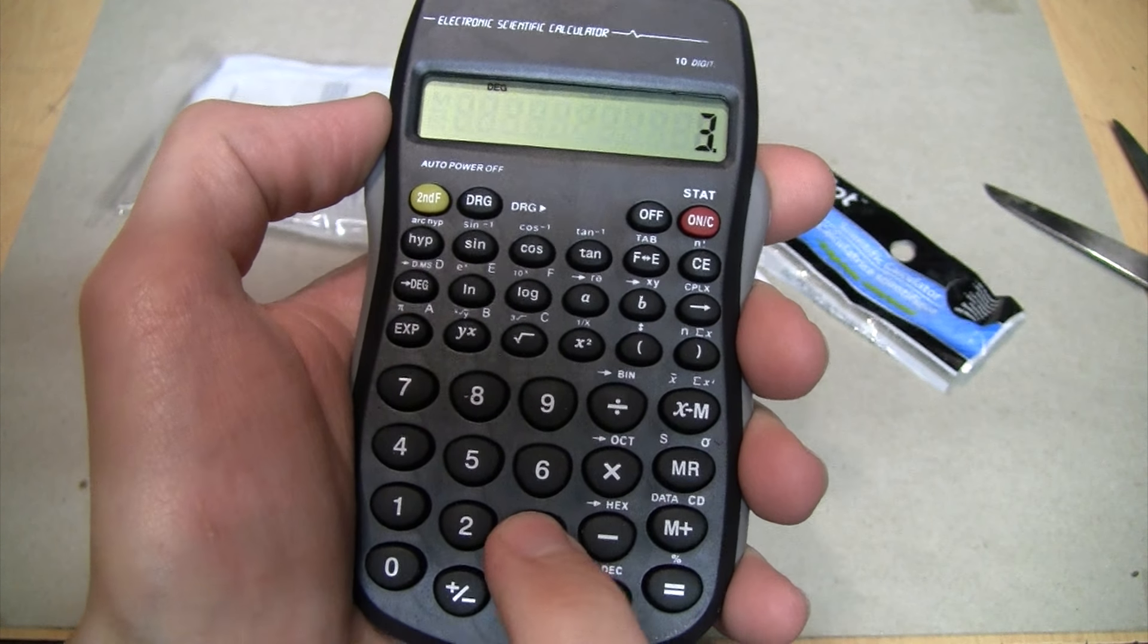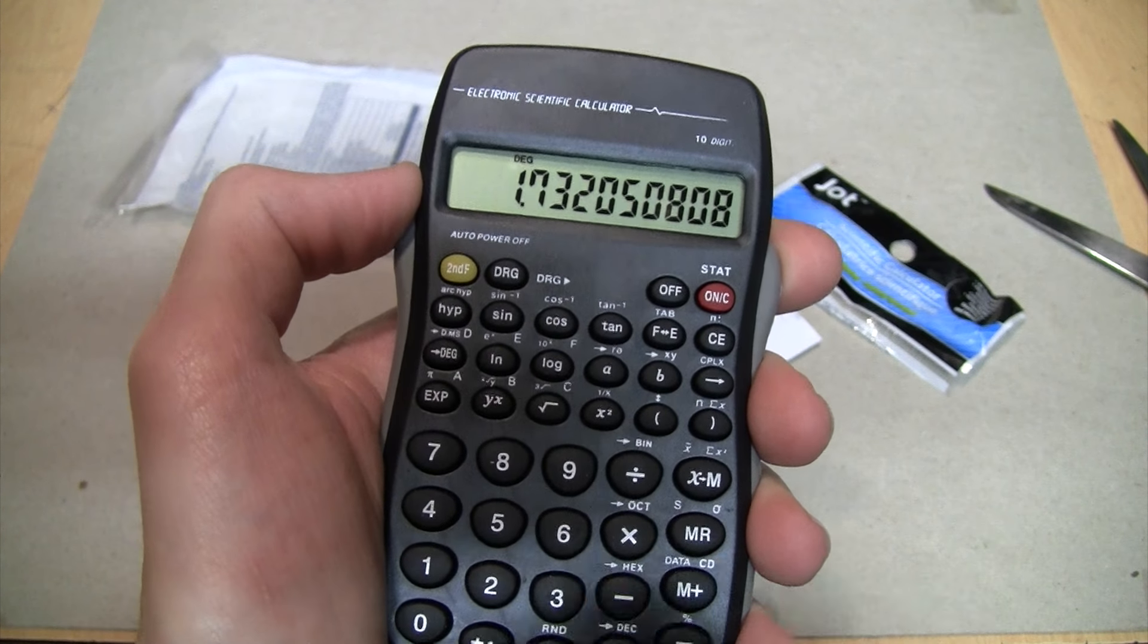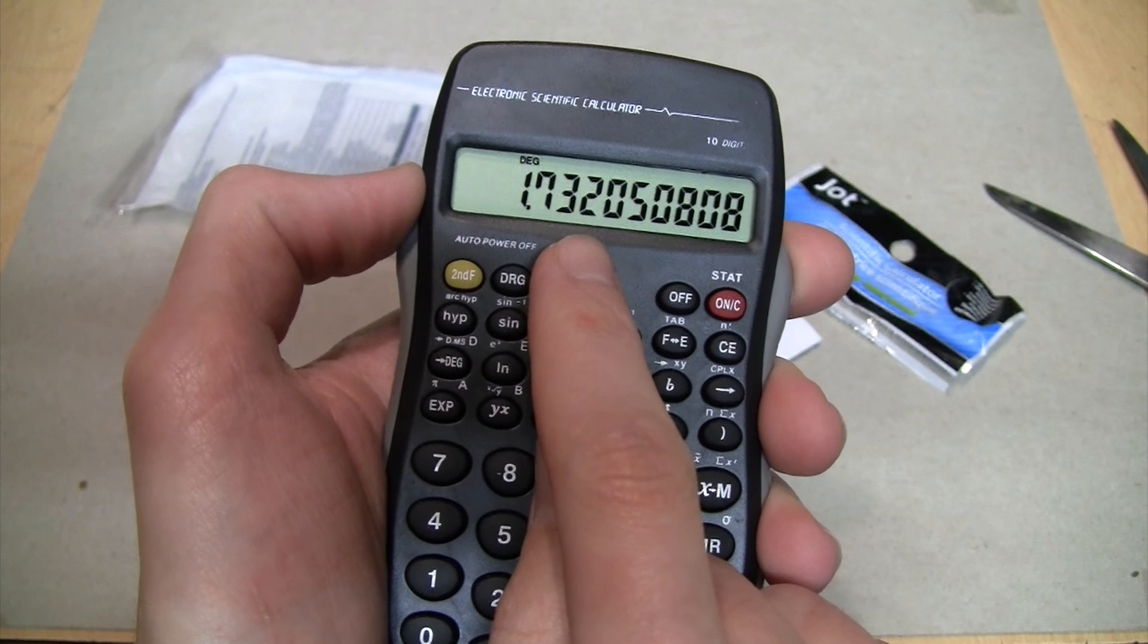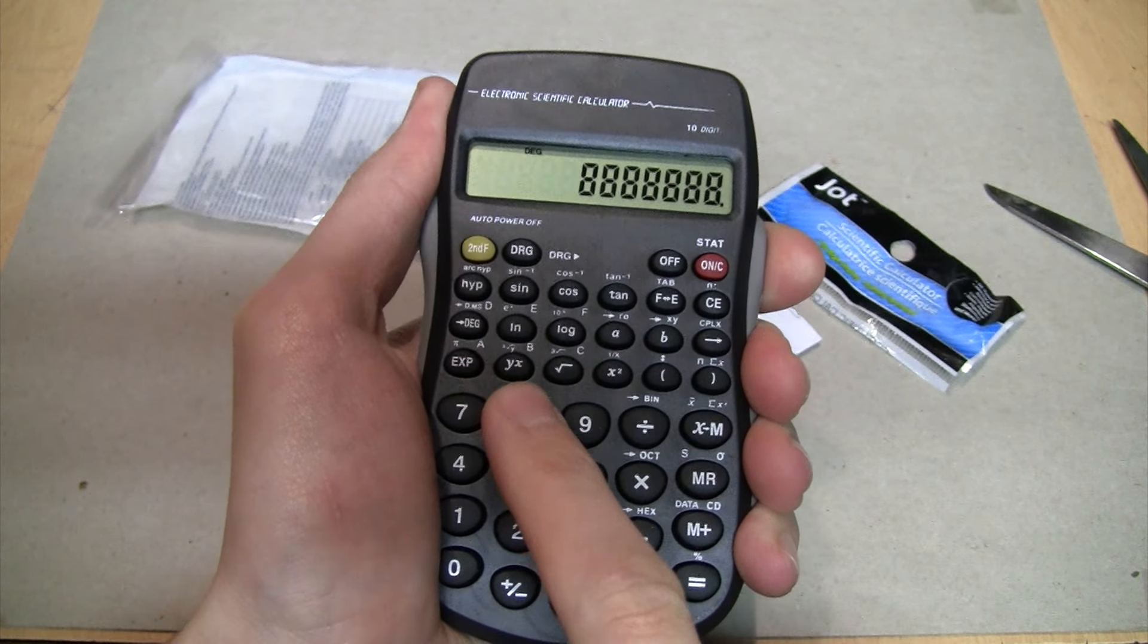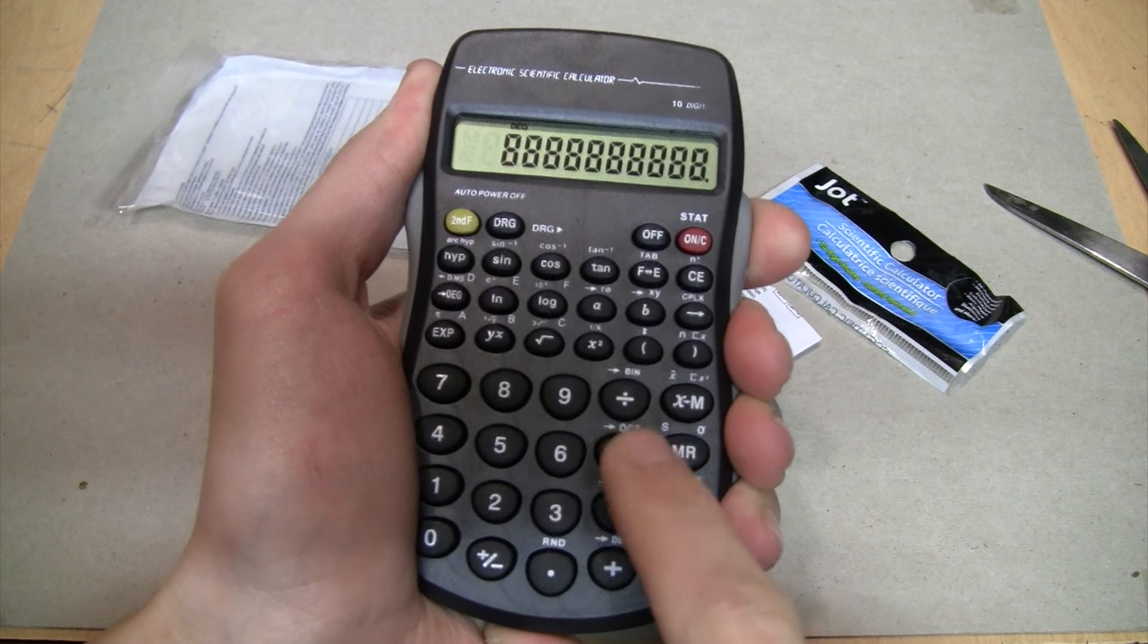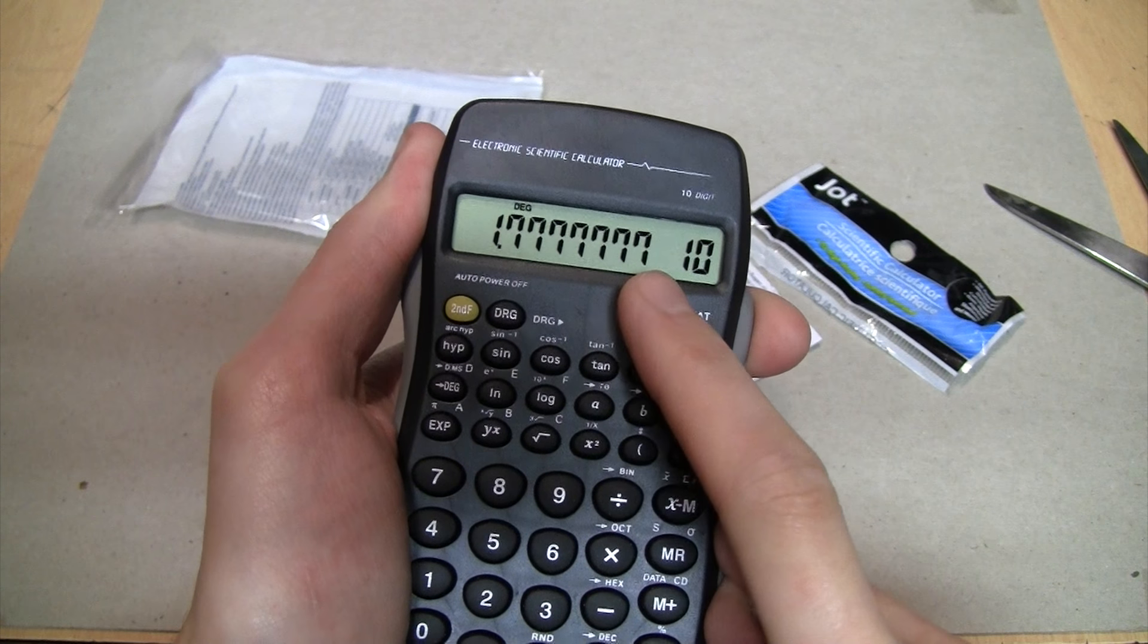It does have a random number generator which generates random numbers between zero and one, although it only has three digit precision, so it's really not that great. And everyone in the US knows the square root of three, because 1732 was the year George Washington was born, and it's 1.732.